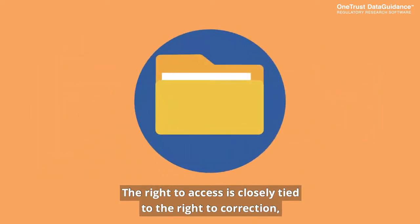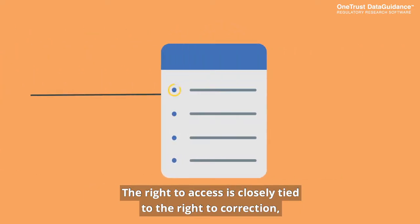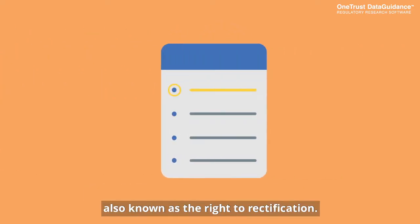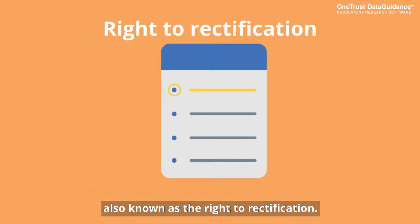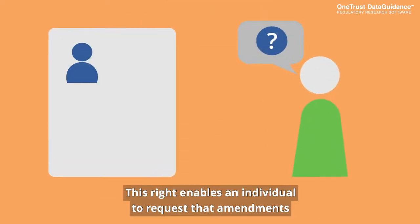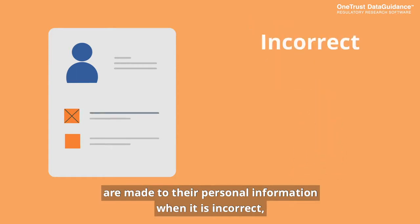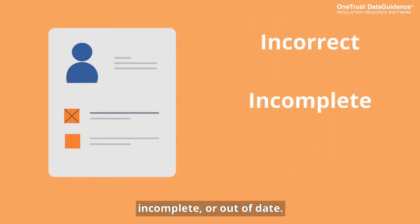The right to access is closely tied to the right to correction, also known as the right to rectification. This right enables an individual to request that amendments are made to their personal information when it's incorrect, incomplete, or out of date.